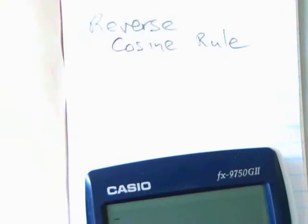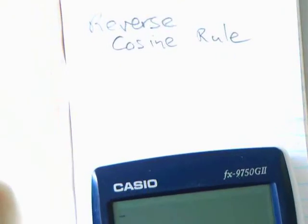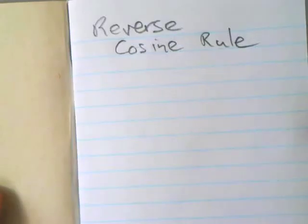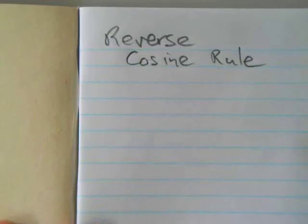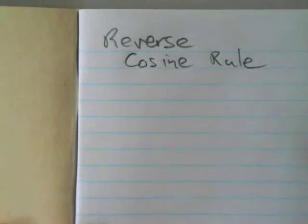The next one for Year 12 Maths is the reverse cosine rule. That's using the cosine rule to go backwards to find an angle. In the same way when you did trig, you could find a side or you could find an angle, we're going to play the same game.